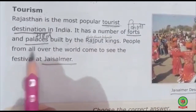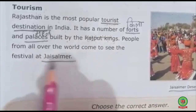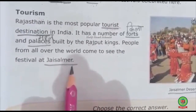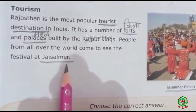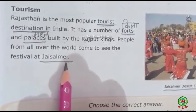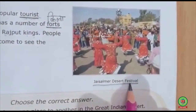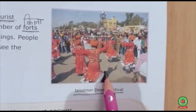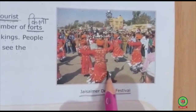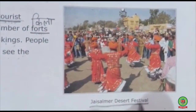People from all over the world come to see the festival at Jaisalmer. Jaisalmer is a desert festival celebrated in the month of February in the beautiful city of Jaisalmer, three days before the full moon. This is the world famous Jaisalmer desert festival celebrated in Rajasthan.